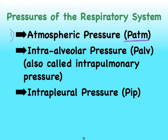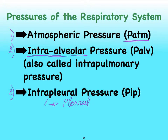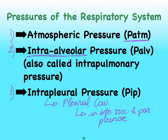Then we have the pressure inside of our lungs or inside of the alveoli. I prefer to call it the intra-alveolar pressure, but there are other synonyms such as intra-pulmonary, and we abbreviate it accordingly. Finally, we also have to consider the pressure inside of the pleural cavity, located between the visceral and the parietal pleura, where you have the watery fluid called serous fluid. We'll abbreviate that as PIP.